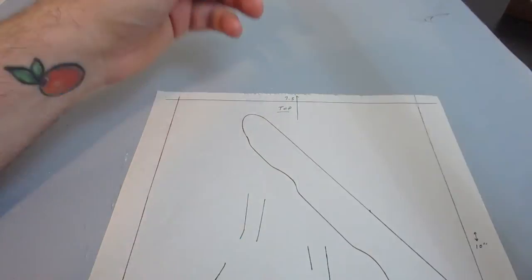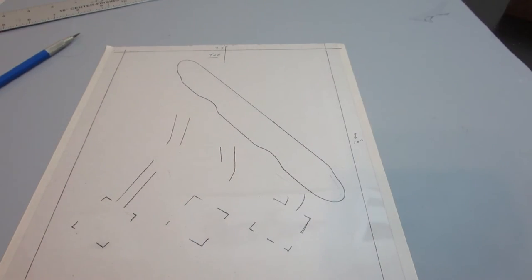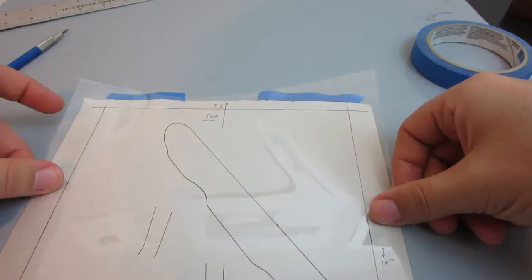After drawing all my dimension lines, I tape down the sheet of plastic onto the paper, line it all up again, and hot glue each object onto the plastic.